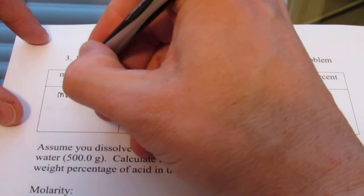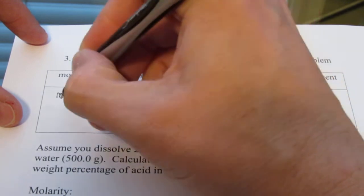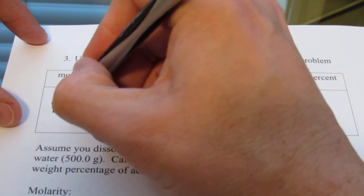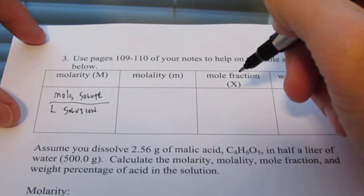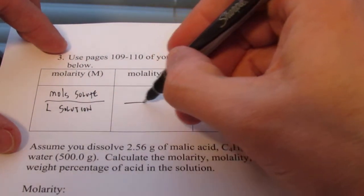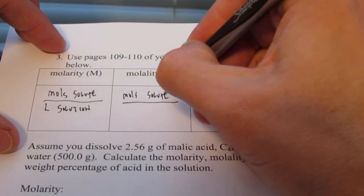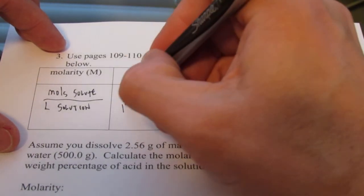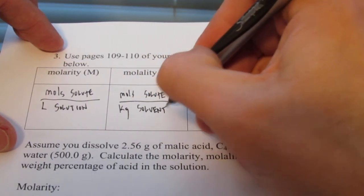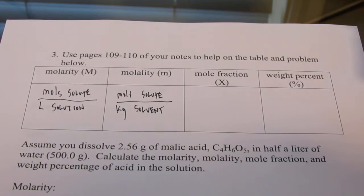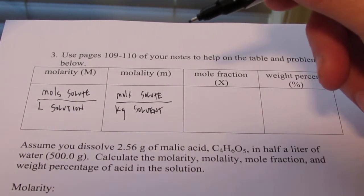and weight percent. So molarity, remember, is moles of solute divided by liters of the solution. And that's molarity. Molality has the same numerator. So it's moles of solute. But this time we divide by kilograms of just the solvent. And generally speaking that's water. But we could also have other solvents.